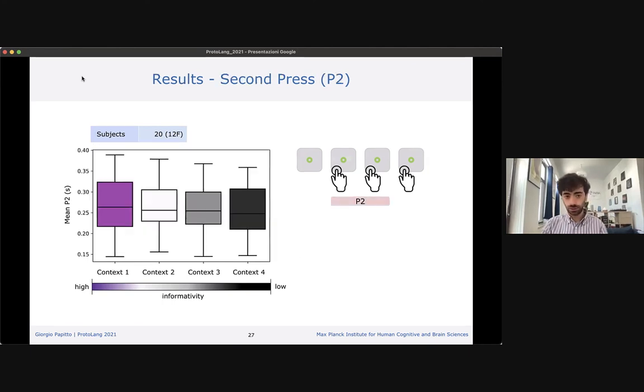Now we can look at the second press, the time participants needed to shift from the first to the second movement. We ran a frequentist ANOVA as before, but this time it resulted as non-significant. However, to check whether we had evidence not only for rejecting our hypothesis but for accepting our null hypothesis, we ran a Bayesian ANOVA. This gave us quite strong evidence in favor of the null hypothesis. That is to say, as expected, context informativity does not have an effect on the time participants need to make the second press.